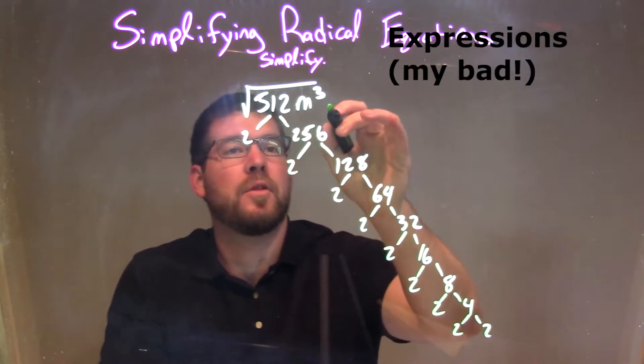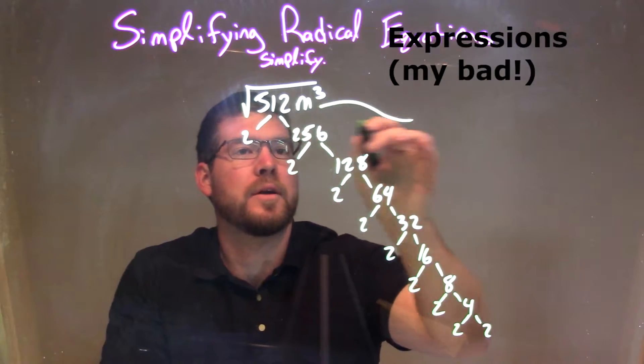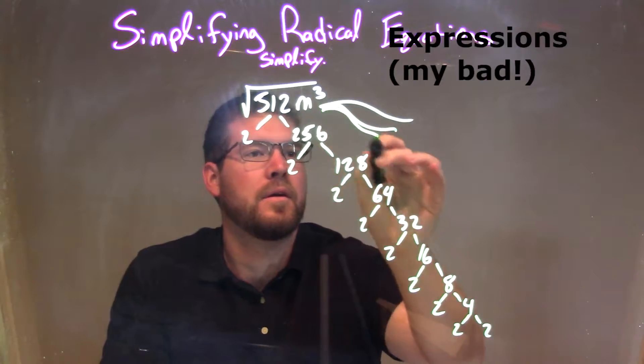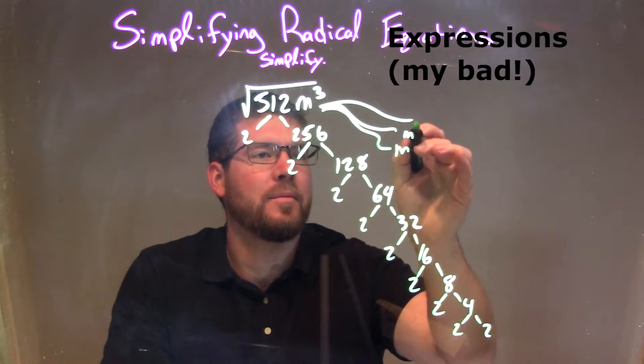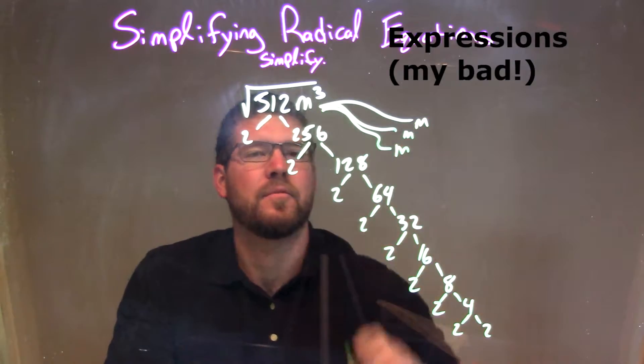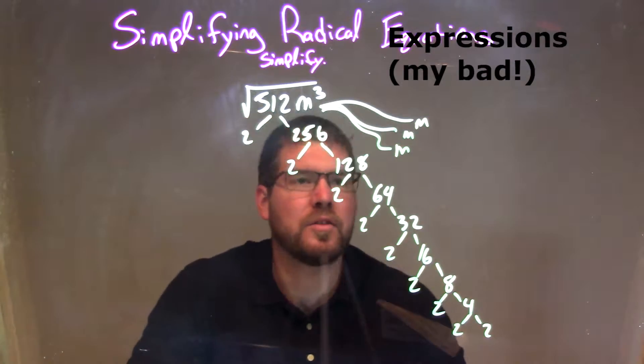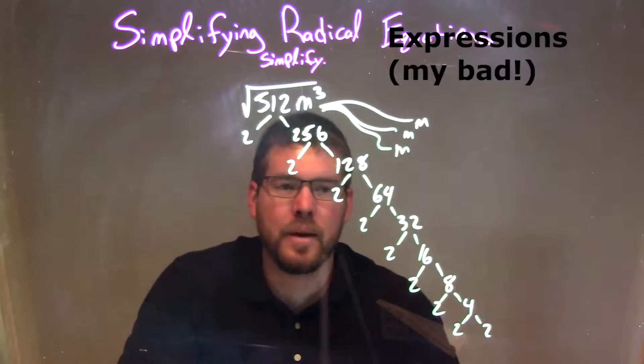m to the third power can be broken down to m times m times m. m to the third is m times m times m.